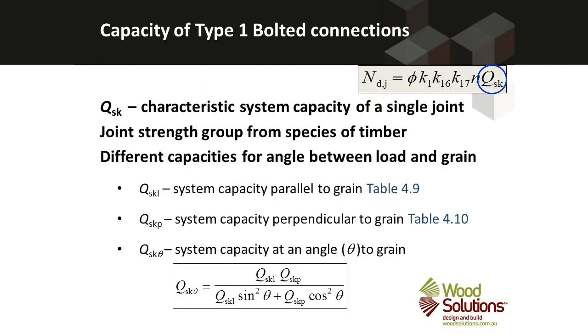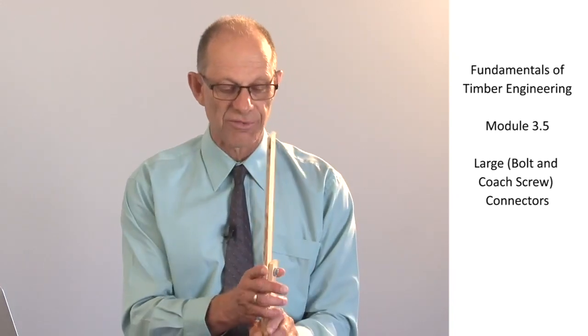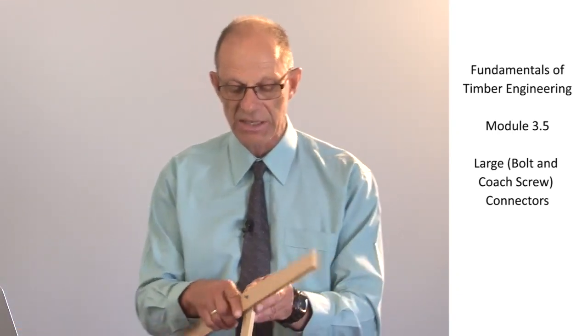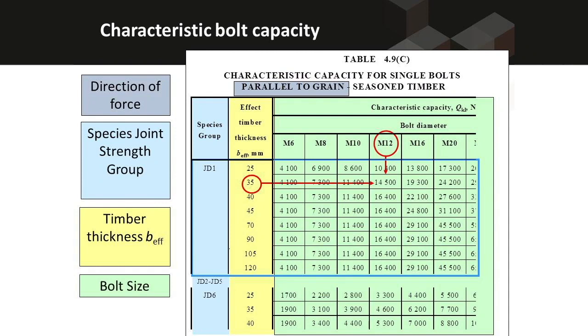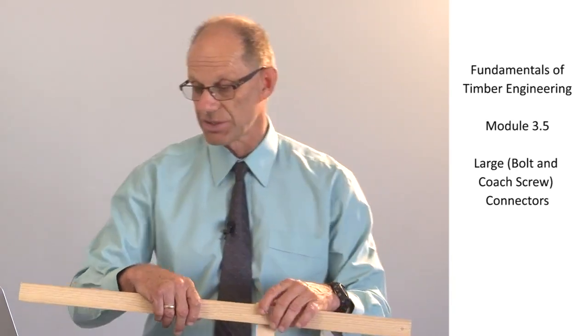The characteristic system capacity of a bolt in a joint is given on this particular slide. And there are two different capacities. There is QSKL for parallel to grain and QSKP for perpendicular to grain. And they are each found by looking up different tables. So to find the characteristic capacity of a bolt, the first thing is to work out what is the direction of the force relative to the grain in the timber. If the force is parallel to the grain, as it is for the vertical member in this configuration, we use the table that you can see on the slide at the moment. On the other hand, if the load is perpendicular to the grain, there is a completely different table that we use to find the capacity of the bolt in the joint.